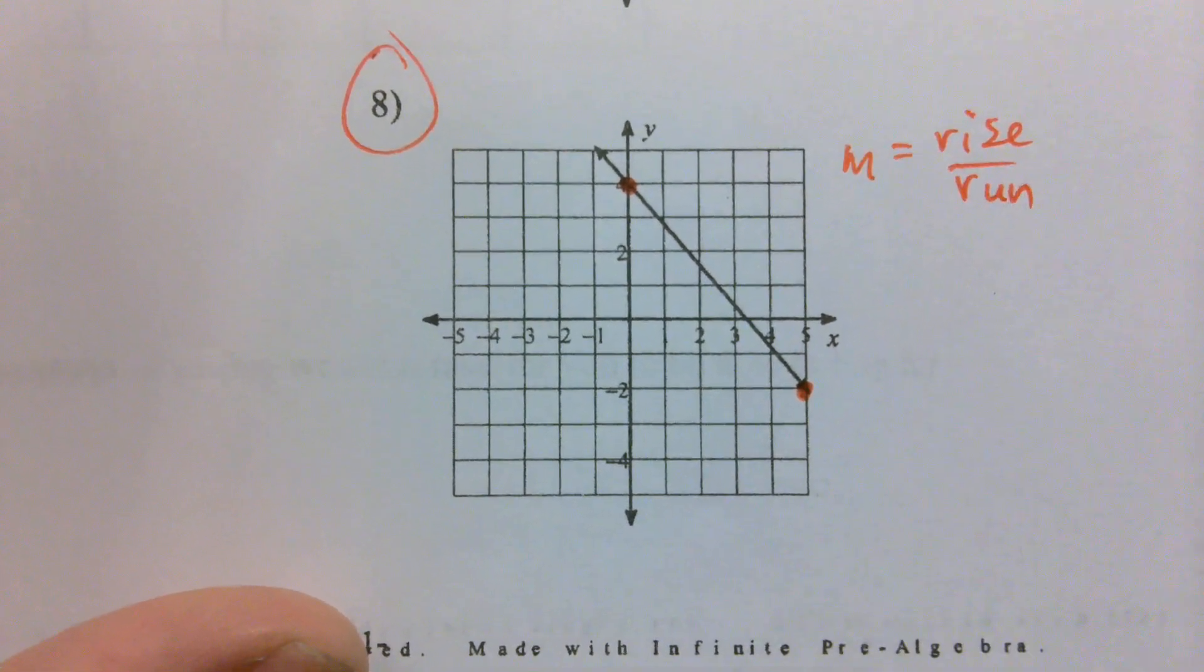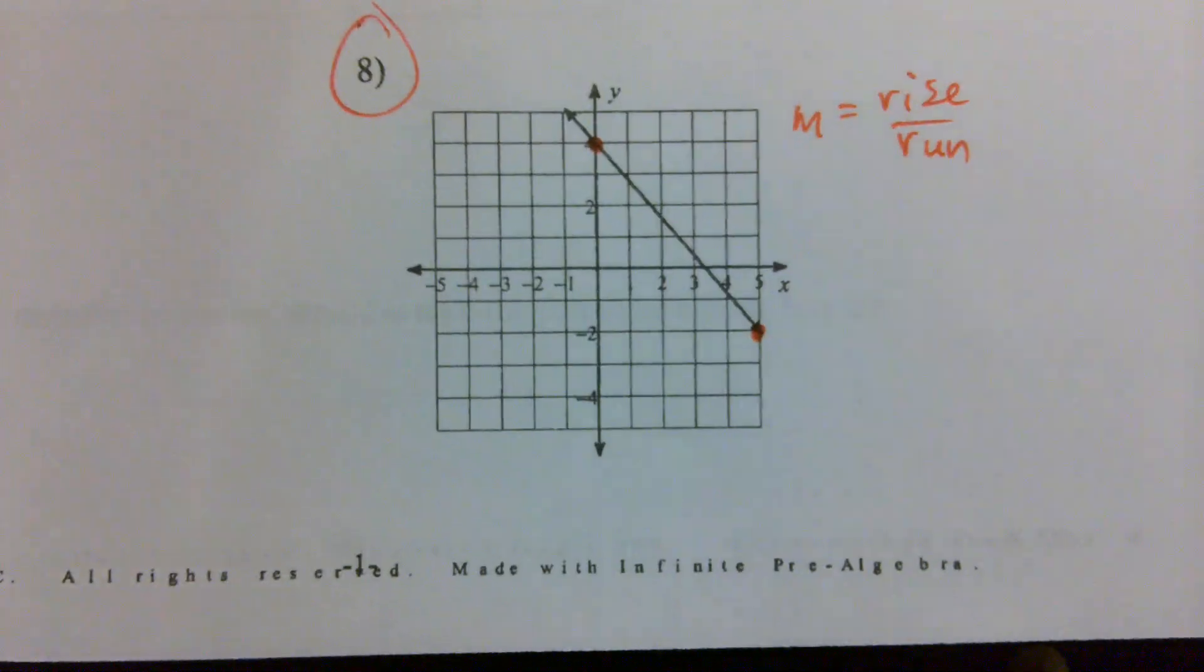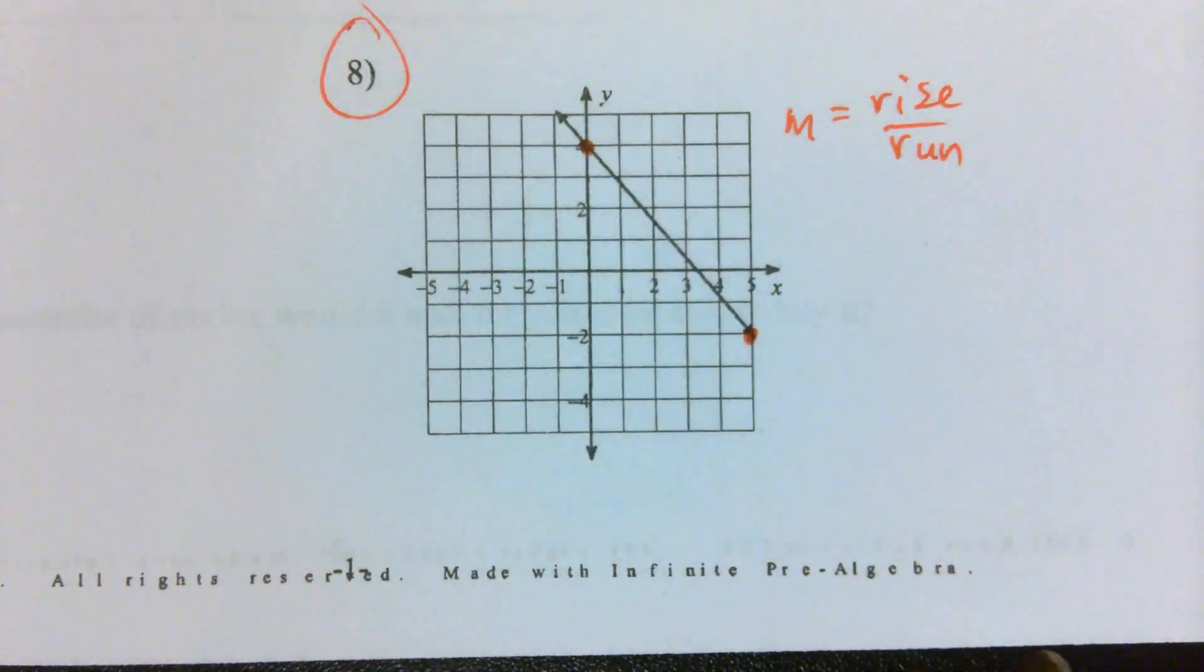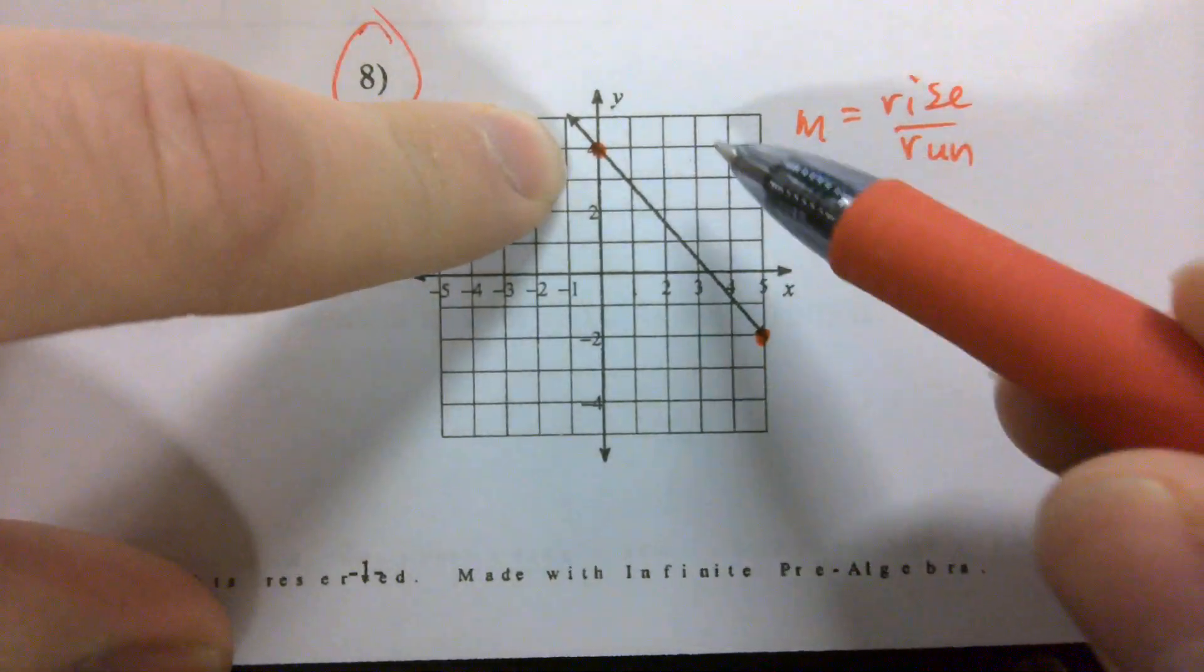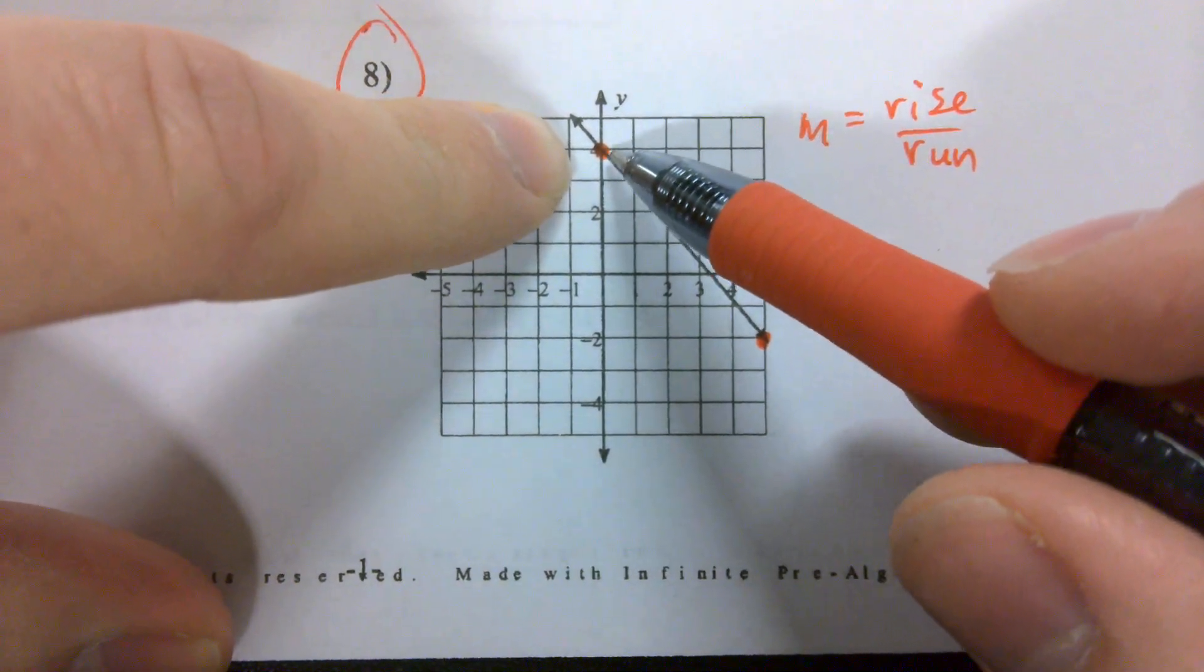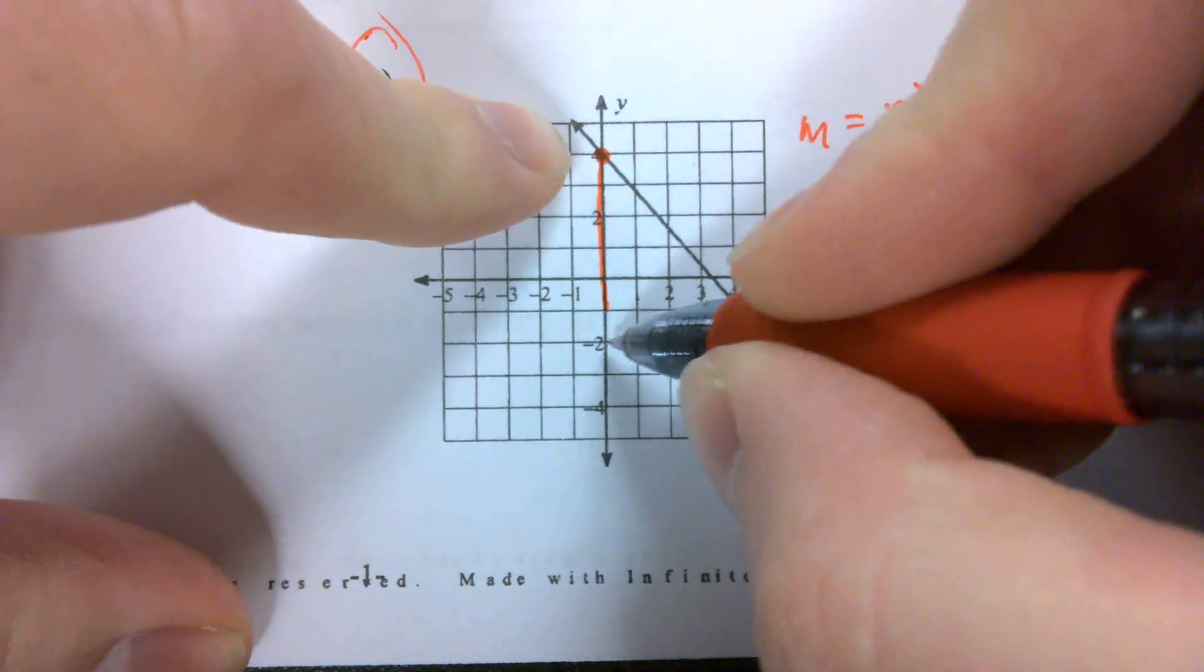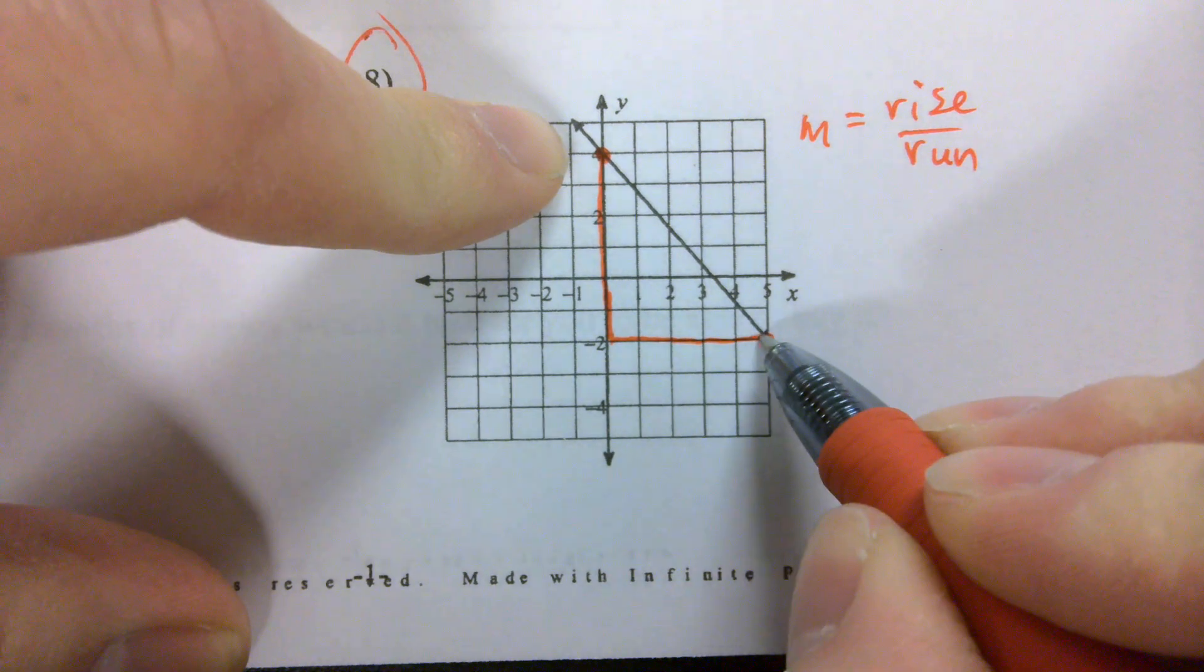If I want to find slope with a graph, I've got to use rise over run. If we remember, we always want to start with the leftmost point and work our way to the right by first rising. So if I want to start at this point here, am I going to be rising up or down? Down. I'm going to count how many spaces I go down. I'm going to draw my little triangle. I'm going to count how many spaces I go over.